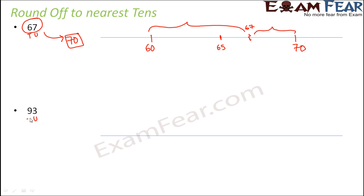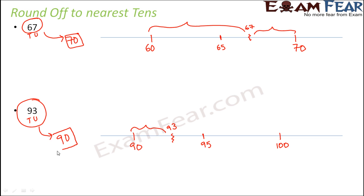93 — here the units place is 3 and the tens place is 9, so this lies somewhere between 90 and 100. Somewhere between 90 and 100 would be 95. 93 would lie somewhere closer to 90, so we see that 93 is more close to 90 than to 100. Therefore 93 can be rounded off to 90. Using 90 makes calculations slightly easier and less tedious than using 93.